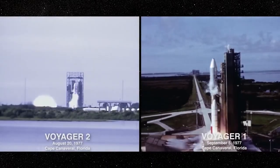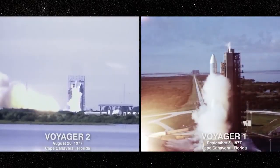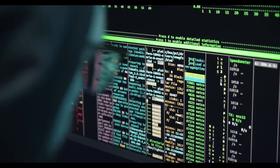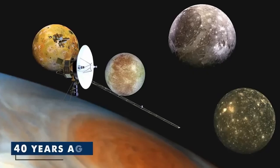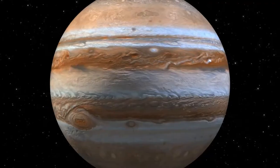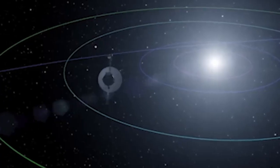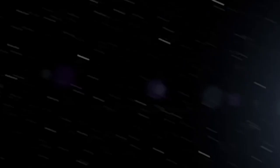Imagine this. Two spacecraft launched over four decades ago are now sending back data from the very edge of our solar system. Voyager 1 and Voyager 2, initially designed to explore Jupiter and Saturn, have journeyed far beyond their intended destinations.